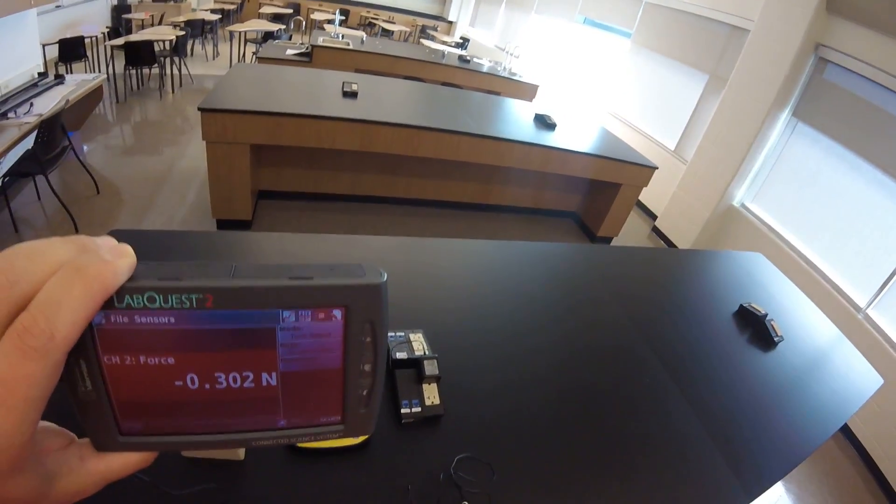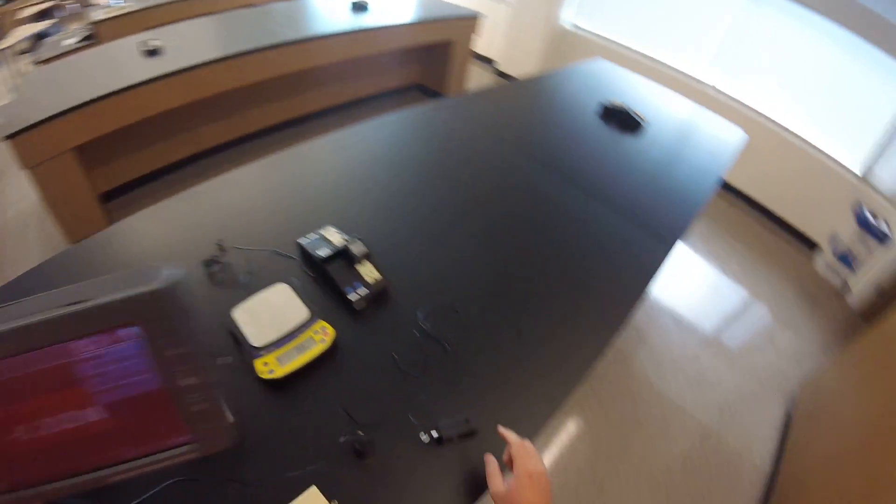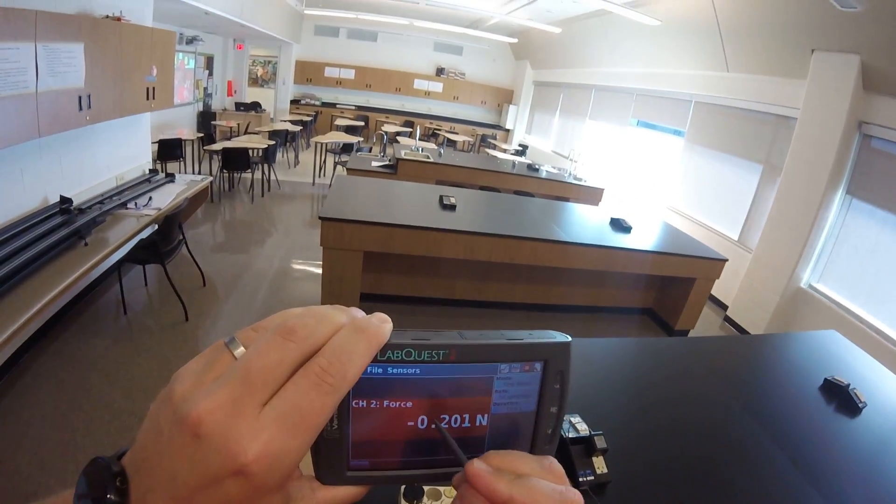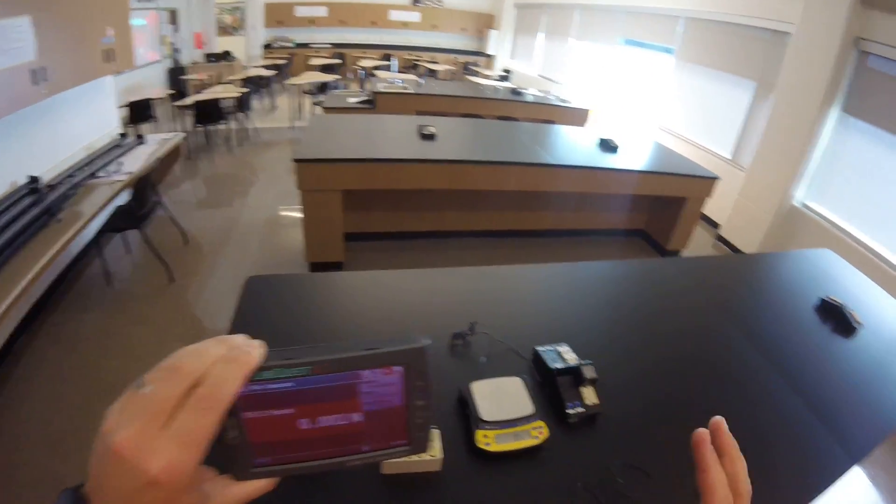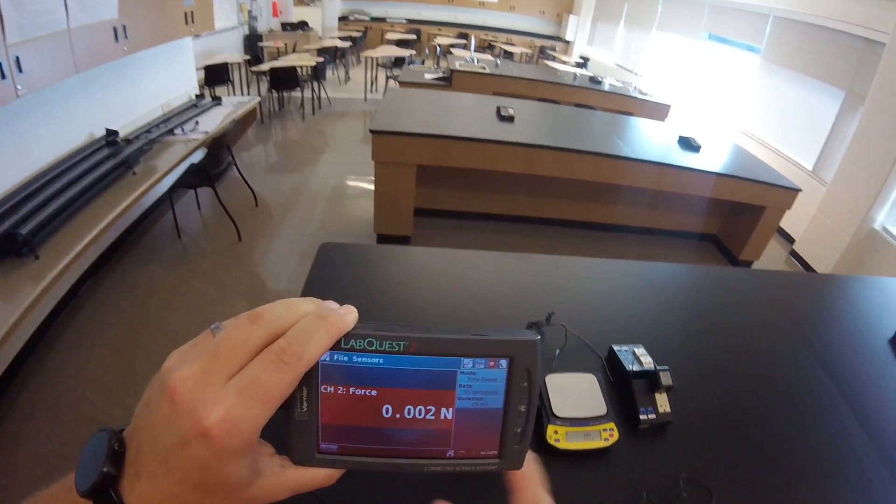At this point, I'm going to zero my force sensor, I'm going to lay it on its side, and touch force sensor, and touch zero. That way, I've got a measure of zero when nothing is being applied, nothing is being done to the force sensor.